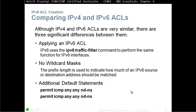Comparing IPv4 and IPv6 Access Control Lists: although they are very similar, there are three significant differences. First is applying the ACL — IPv6 uses the 'ipv6 traffic-filter' command instead of 'ip access-group'. Second, there is no wildcard mask in IPv6 — the prefix length is used to indicate how much of the IPv6 source or destination address should be matched. Third, there are additional default statements: two implicit permit statements — 'permit icmp any any neighbor-discovery neighbor-advertisement' and 'permit icmp any any neighbor-discovery neighbor-solicitation' — followed by an implicit deny any any.